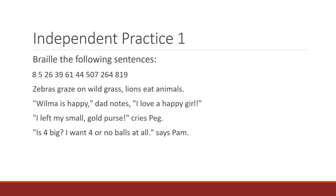The first sentence is: Zebras graze on wild grass, lions eat animals. Period. The second sentence is: open quote, Wilma is happy, comma, end quote, dad notes, comma, open quote, I love a happy girl, exclamation mark, closed quote.